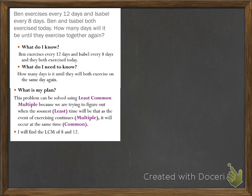What do I need to know? This is where a lot of people make mistakes — you want to make sure you're solving the problem they're actually asking. So: how many days until they both exercise on the same day again? And what is my plan? Since we've identified this as a least common multiple problem, we need to find the LCM because we're figuring out the soonest — that's 'least' — time the event of exercising, 'multiple,' will occur at the same time, 'common.' So we'll find the LCM of 8 and 12.